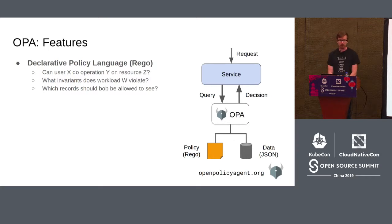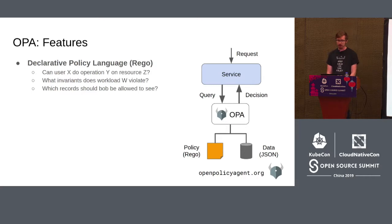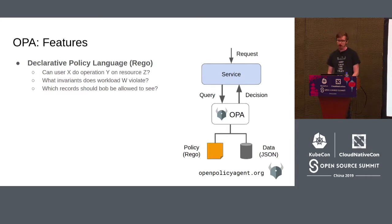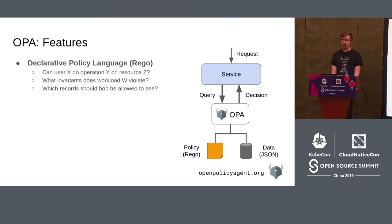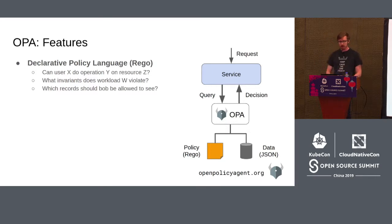When you use OPA, the first thing you encounter is OPA's policy language called Rego. Rego is a high-level declarative language purpose-built for OPA that is really good at expressing policies — answering questions like 'can user X perform operation Y on resource Z?', 'which invariants would this workload violate if deployed?', or 'which records should Bob be allowed to see?' It's a high-level declarative language that's really good at letting you write constraints over large, unstructured sets of JSON data.